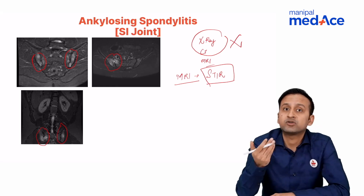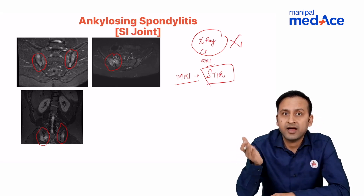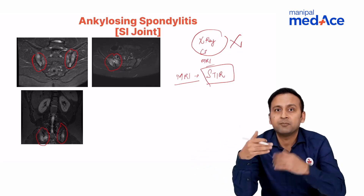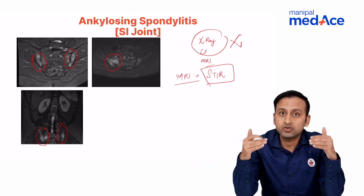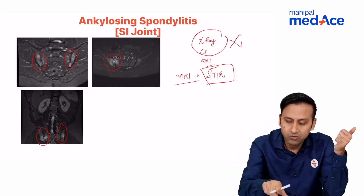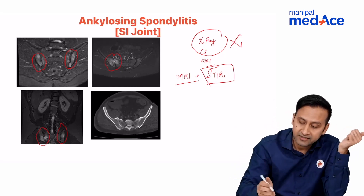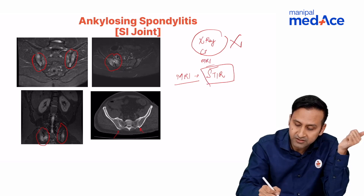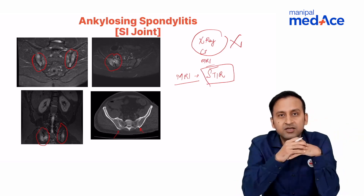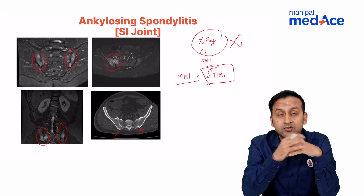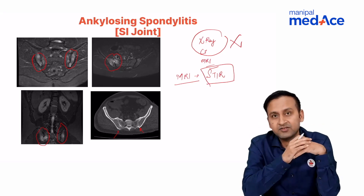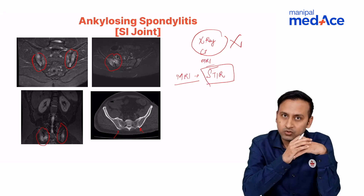If the disease progresses further, ankylosing spondylitis will eventually cause complete fusion of the bones with cortical fusion. To look at bony fusion, CT is appropriate. On CT, you can see that the joint space between the sacroiliac joints is completely obliterated — this is end-stage disease with complete fusion of the sacroiliac joints.